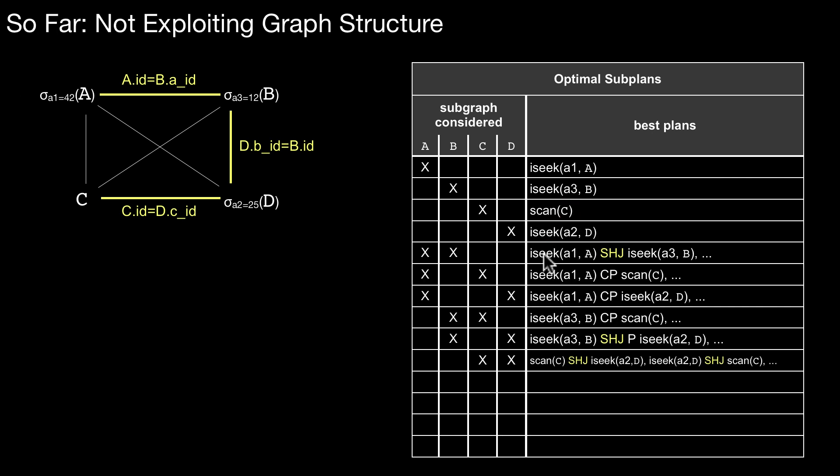Second optimization is you exploit the graph structure. So what we did before is we looked at each and every combination among the different subsets. So we saw it here. If you combine A and C. There is no yellow line among them. This is this shallow white line which means there is only a cross product. You can only combine those two relations by cross product. And that's how I wrote it down here. Usually these plans do not make sense. Cross products are usually way too expensive. Therefore,